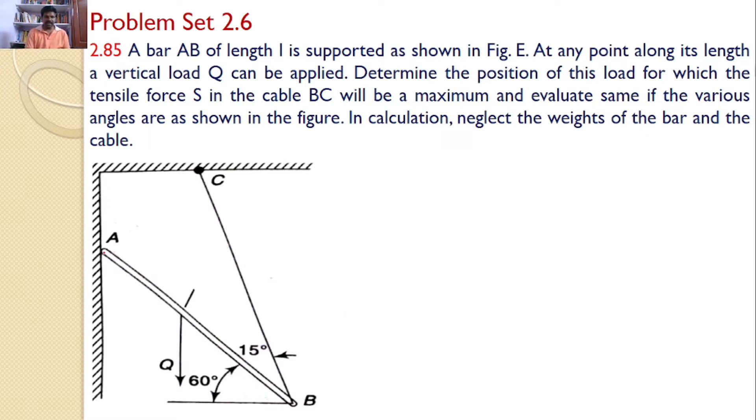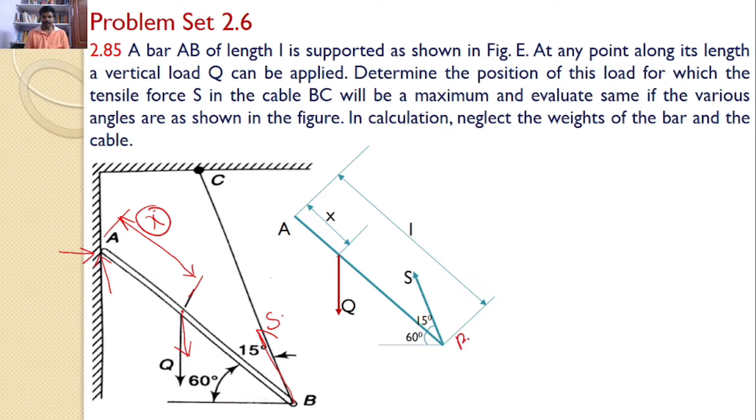Further let us consider the free body diagram of bar AB. Now at A is a hinged support hence I can find two reactions and a weight applied load Q which is at a distance of x we don't know this distance. Our interest is to find this distance x only. And at end a string is attached hence a string force will develop along the bar BC. So this is the free body diagram of the bar AB. A weight Q is applied at a distance of x and the string force S. Now bar AB makes an angle 60 degrees with the horizontal and the string BC makes an angle 15 degrees with the bar. Hence S makes an angle total of 75 degrees with the horizontal.